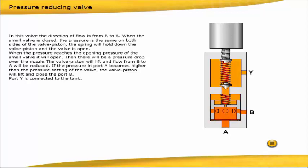When the pressure reaches the opening pressure of the small valve, it will open. Then there will be a pressure drop over the nozzle. The valve piston will lift and flow from B to A will be reduced.